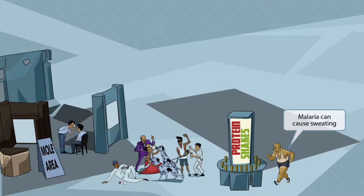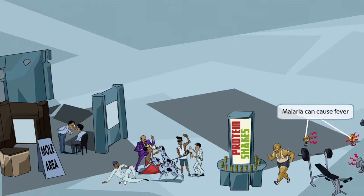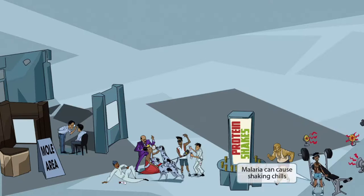Before introducing Plasmodium falciparum and malariae, let's talk about symptoms malaria is known to cause. A sweaty guy just tried some gym equipment and is now going to try a protein shake — this sweat represents the sweating patients with malaria often get. Near the gym equipment are heat lamps, representing fever, which malaria can cause. A smaller fellow is shaking just trying to lift heavy weights — this represents the shaking chills caused by malaria, triggered when red blood cells burst and release merozoites.